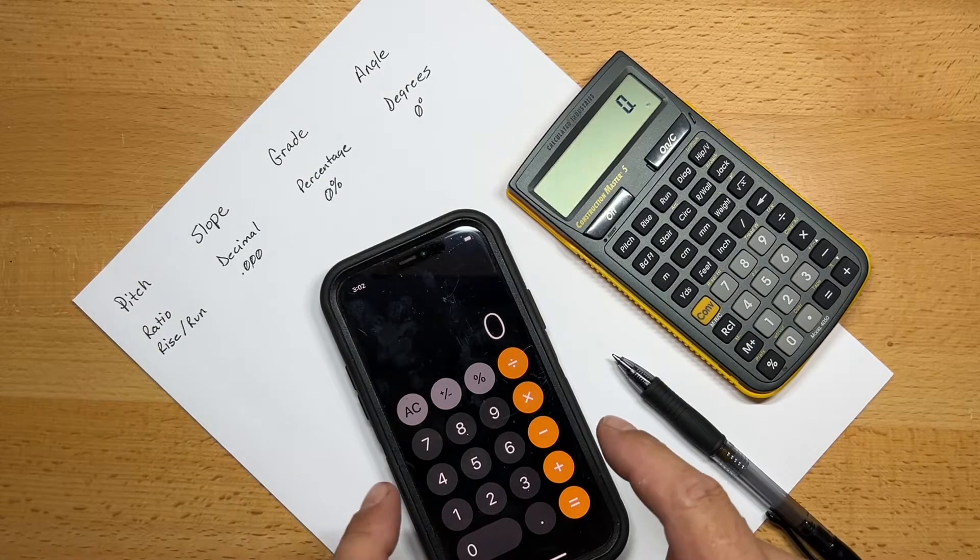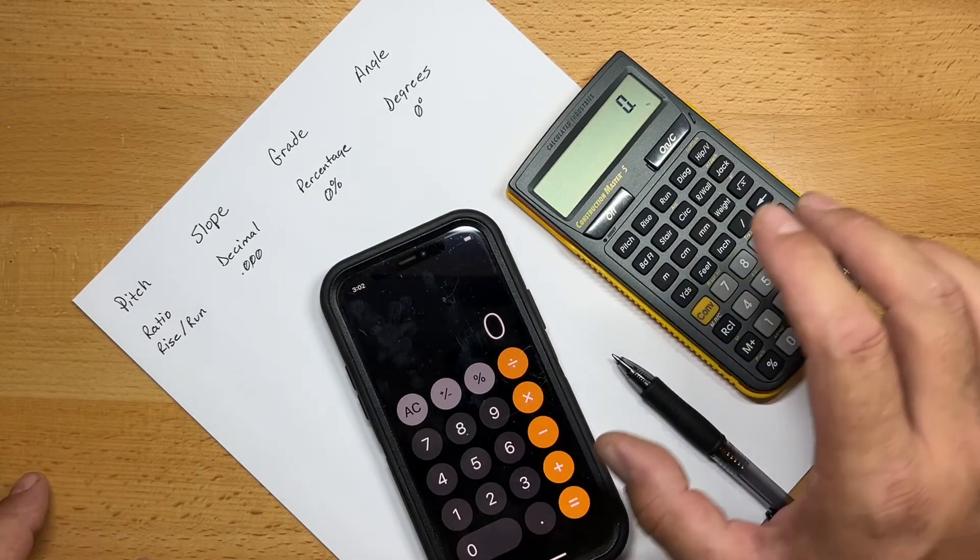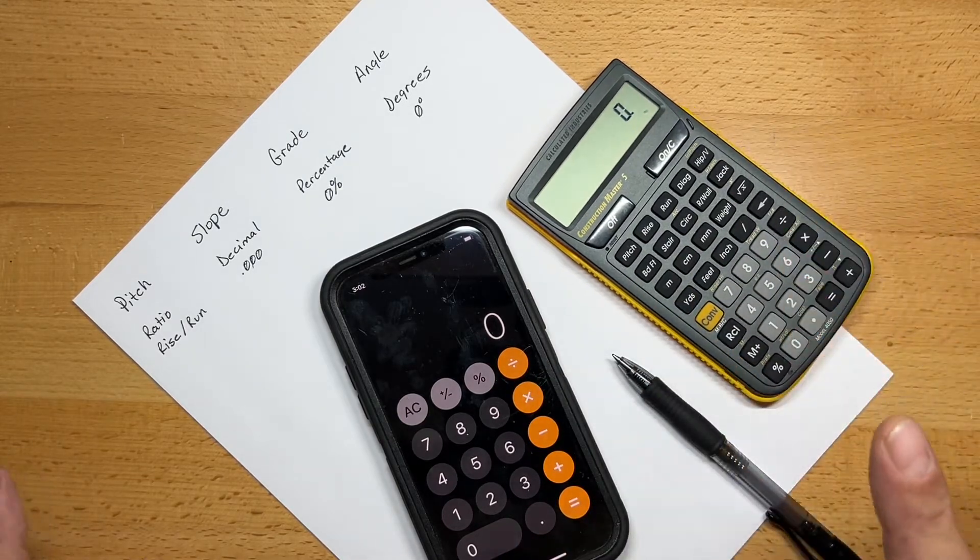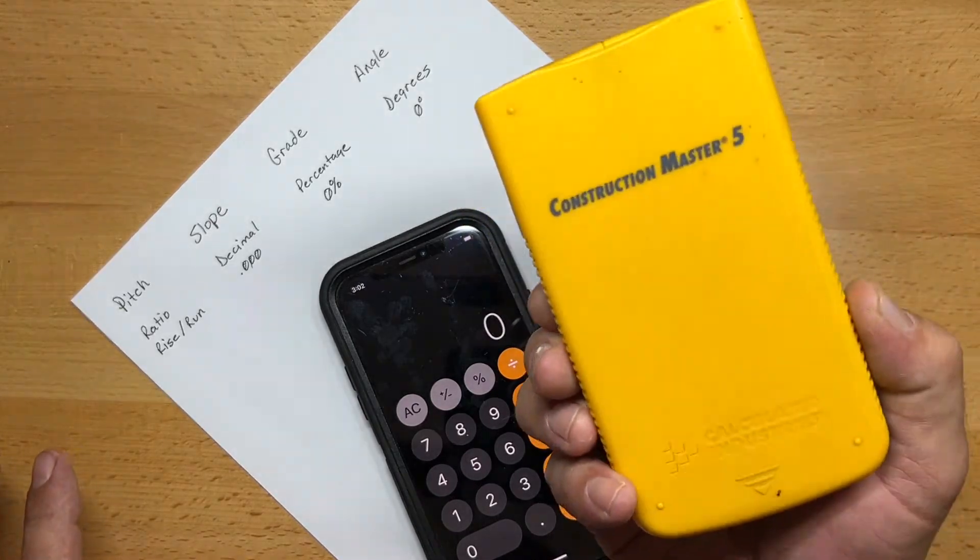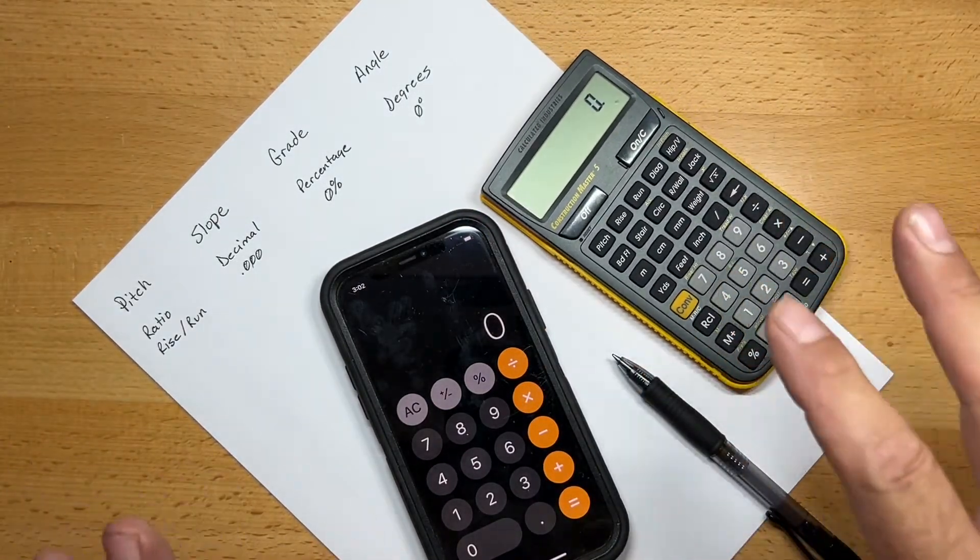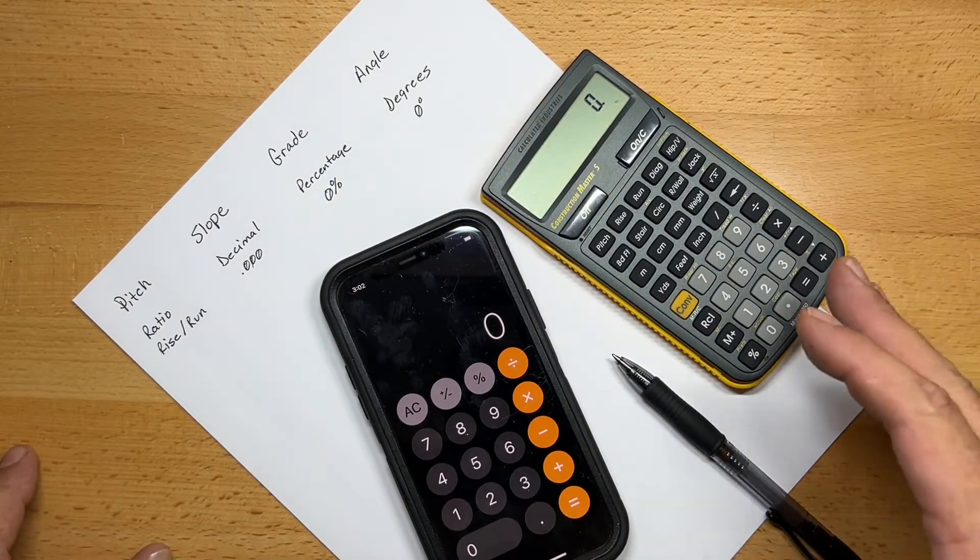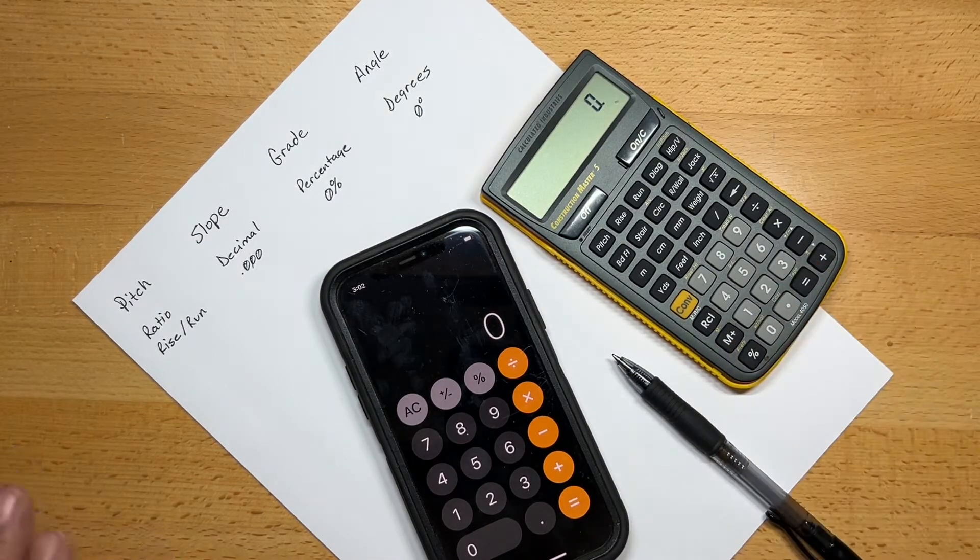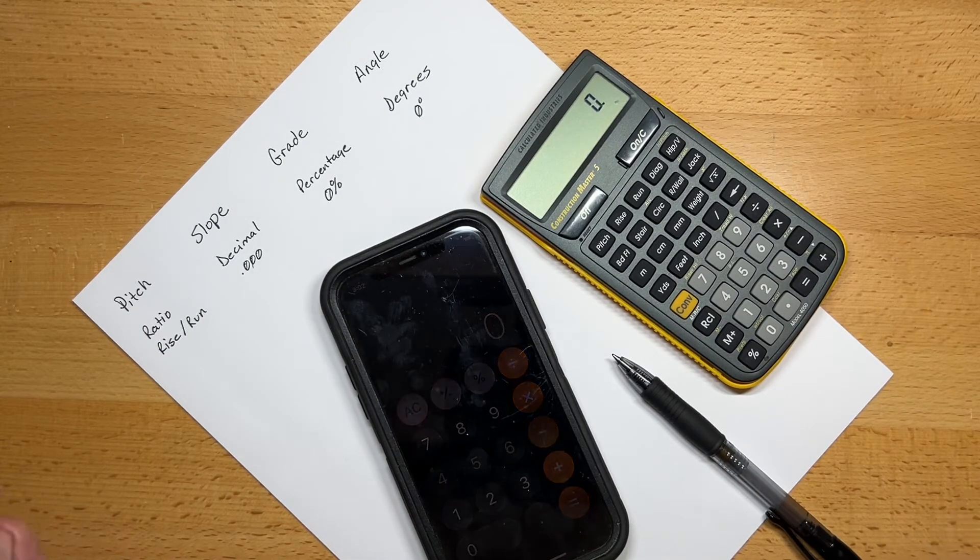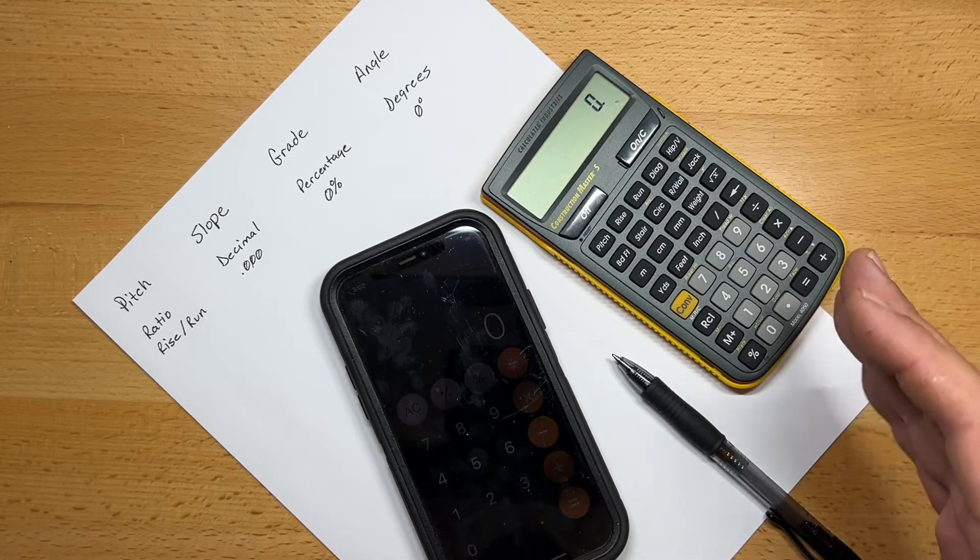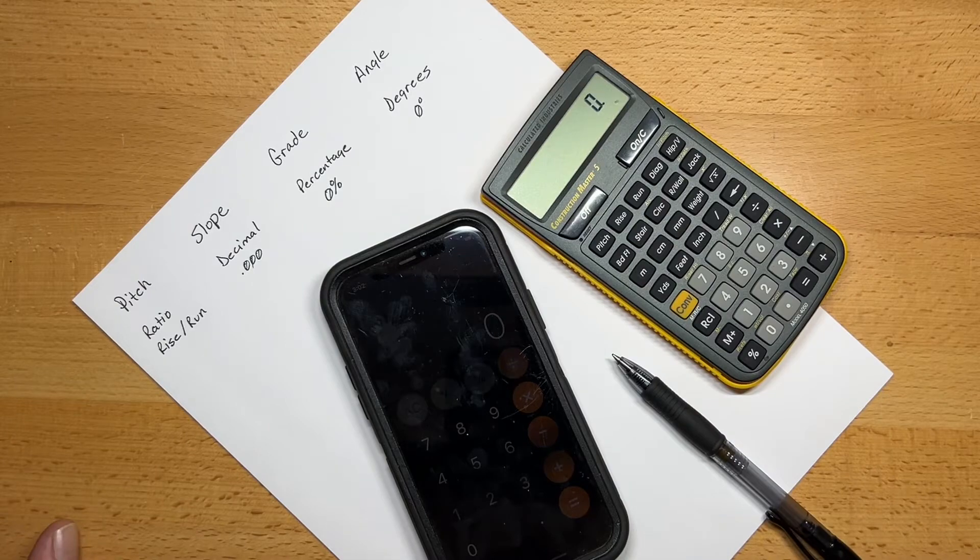And to do that, we're going to be using a normal smartphone calculator. This one is from an iPhone. And I'll also show you how to do it on a more trade-based calculator. This is the Construction Master 5 by Calculated Industries. This particular calculator does a lot of different functions with very minimal input, so you don't have to know the formulas that you necessarily have to know in order to use the iPhone calculator.